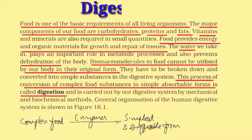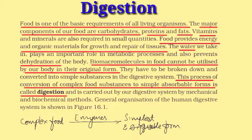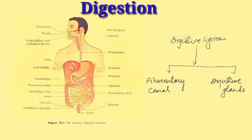We will discuss about digestion. Food is one of the basic requirements of all living organisms. The major components of our food are carbohydrates, proteins, fats, vitamins, minerals, and water. Food provides us energy and organic material for growth and repairing of our tissues. Water plays an important role in metabolic processes and prevents dehydration. The food consists of bio-macromolecules which can't be utilized in our body in their original form, so complex food material is converted into the simplest and diffusable form. This enzymatic hydrolysis is called digestion.